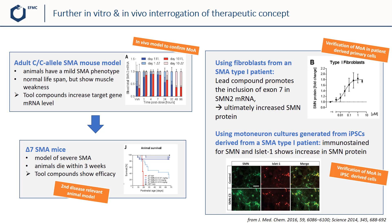The next step was to verify if the effects could also be generated in patient-derived cells, as a system close to the real clinical setting, as opposed to the rodent experiments. Using fibroblasts from type 1 SMA patients, it could be demonstrated that the compounds dose-dependently increase SMN protein. A further experiment highlights that also in motor neuron cultures from iPSC-derived cells from a SMA type 1 patient, an increase in SMN protein could be observed after compound treatment. With this information in hand, the question around the elucidation of the mechanism of these drugs arose.